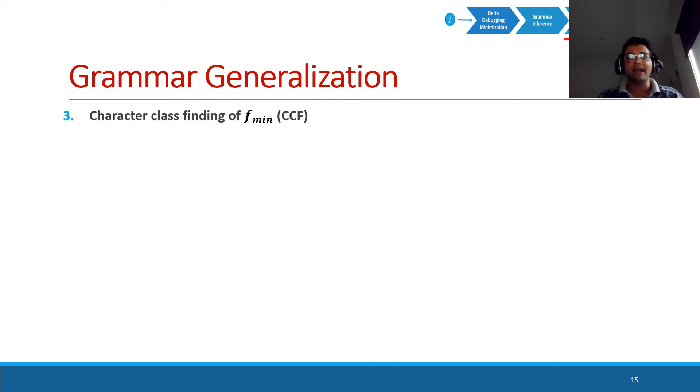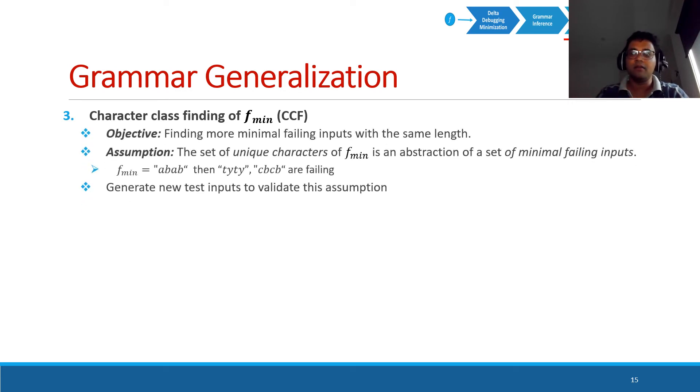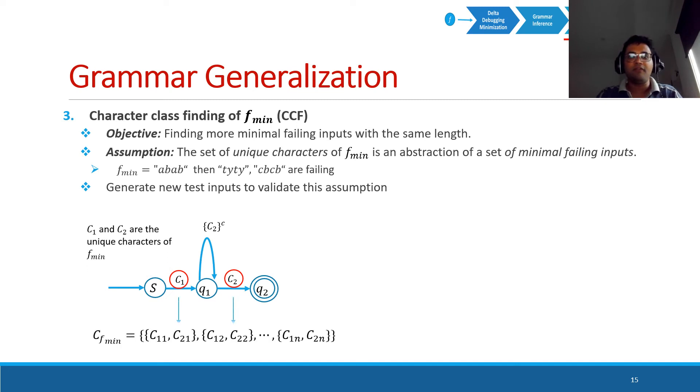Next generalization step is character class finding of the minimal failing input. We have already identified one minimal failing input. We call it f_min. In this particular step, our objective is to find more minimal inputs based on f_min. We assume that the unique characters of f_min represents some kind of an abstract pattern of a group of minimal failing inputs. We validate this assumption using some random substitutions. We generate new inputs for that. And if we find substitutions that lead to such minimal failing inputs, this particular DFA is converted to a collection of DFAs connected with disjunctions.